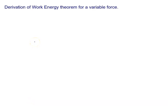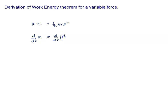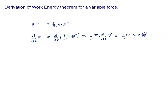Derivation of the work-energy theorem for a variable force. We know kinetic energy is half mv squared. When we differentiate it with respect to time, d/dt of kinetic energy (K) equals d/dt of half mv squared. Since mass is constant, we write half m times d/dt of v squared, which gives half m times 2v dv/dt. The 2 cancels, so d/dt of K equals mv dv/dt.